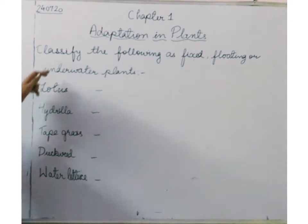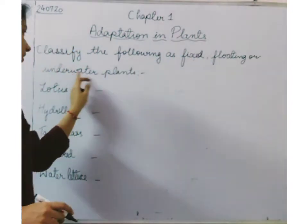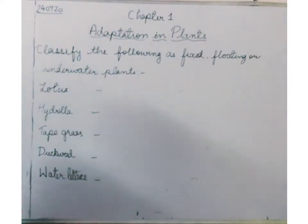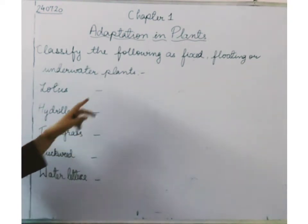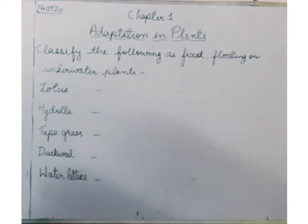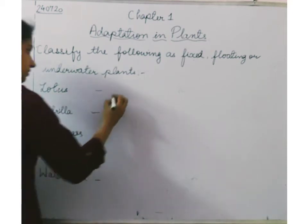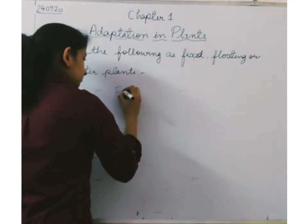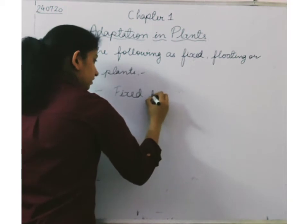The next question is: classify the following as fixed, floating, or underwater plants. We have been given some aquatic plants and you have to classify them as fixed, floating, or underwater plants. The first one is lotus — lotus is a fixed plant.